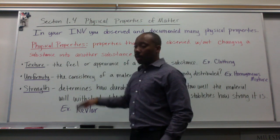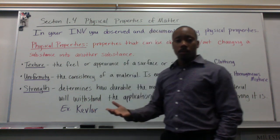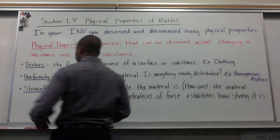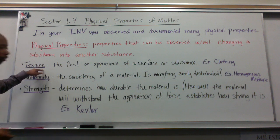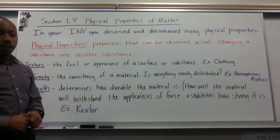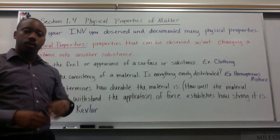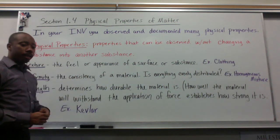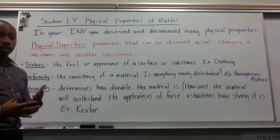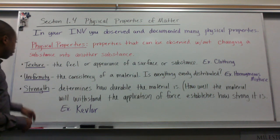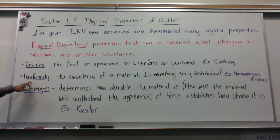Here are some examples of physical properties. We'll go through them and talk about them a little bit. The first is texture. Texture is the feel or appearance of a surface or a substance. An example is clothing — your clothing has different textures. Silk has a different texture than wool.